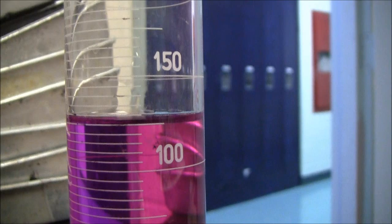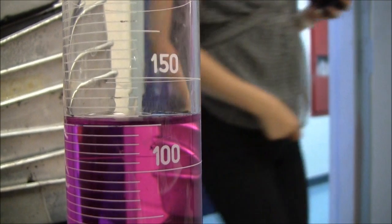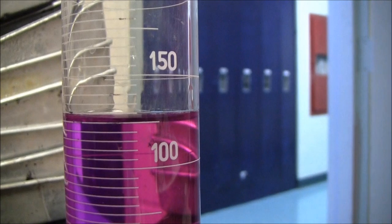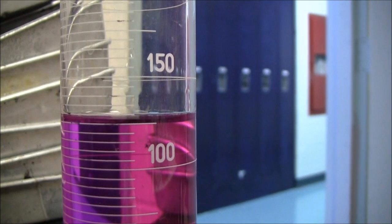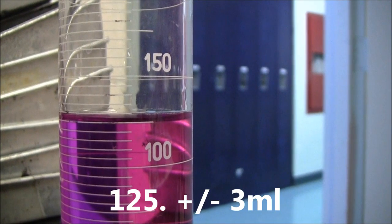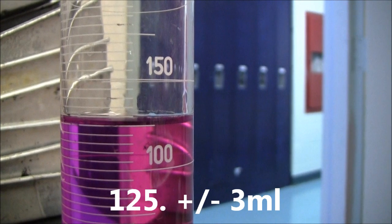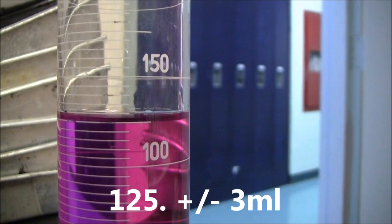This measuring cylinder is 125 millilitres, the smallest division is 5 millilitres, divide that by 2, because it's analog. So it should be plus or minus 2.5, but I'm going to round that to 3, because you only need one sig fig when you're doing uncertainties.